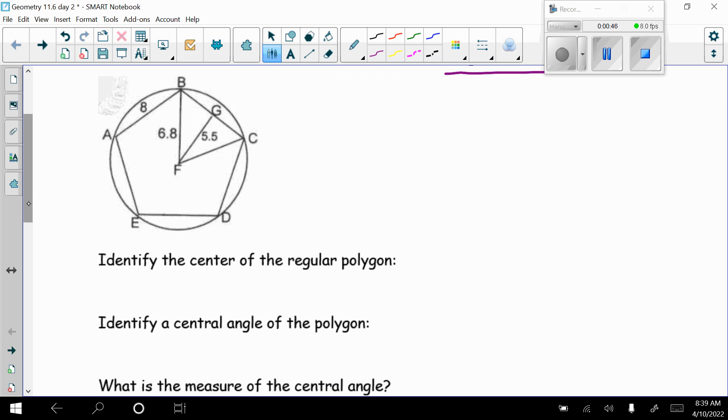First identify the center of the regular polygon. So my center is point F. Identify a central angle of the polygon, so that would be angle BFC, which is drawn. What is the measure of the central angle? So remember that's 360 divided by how many sides. This is a pentagon, so divided by five gives us 72 degrees.